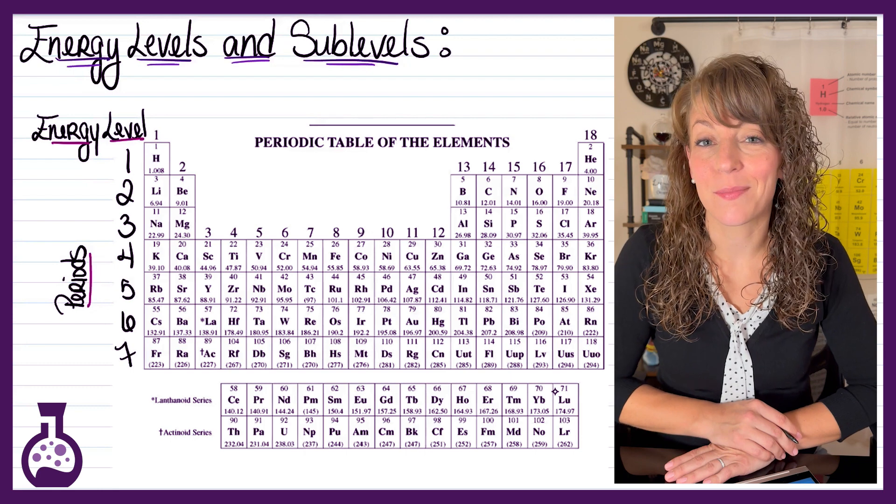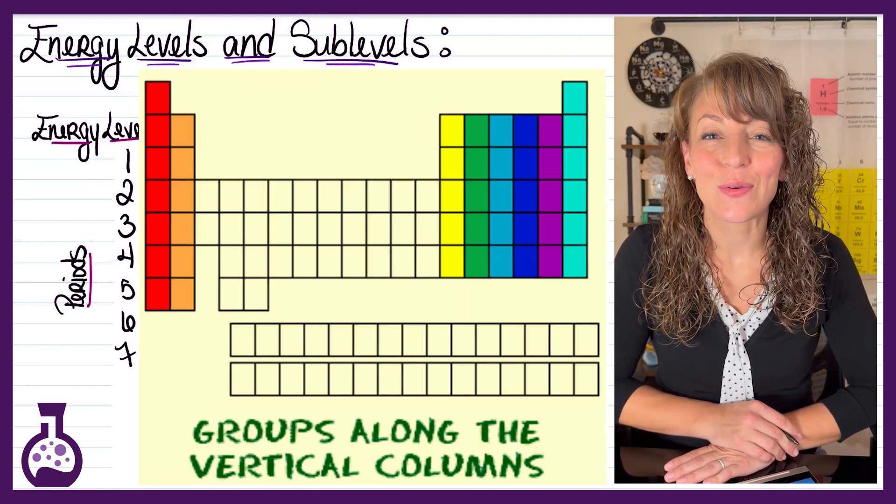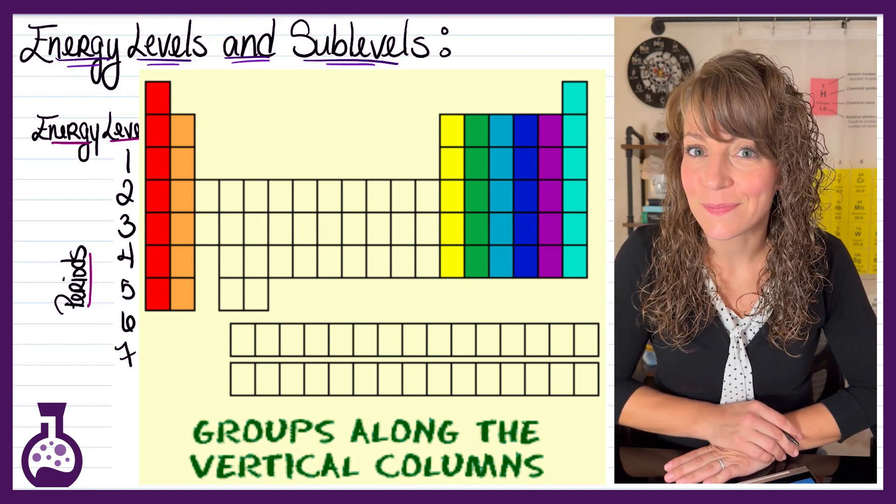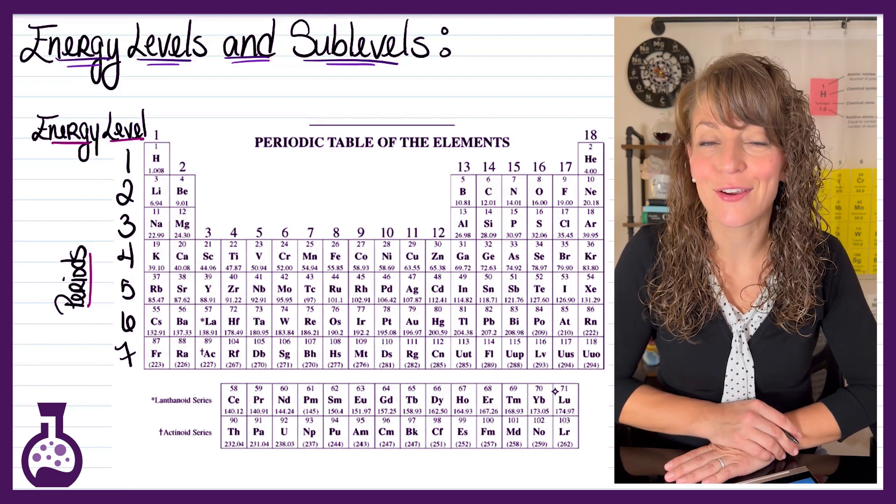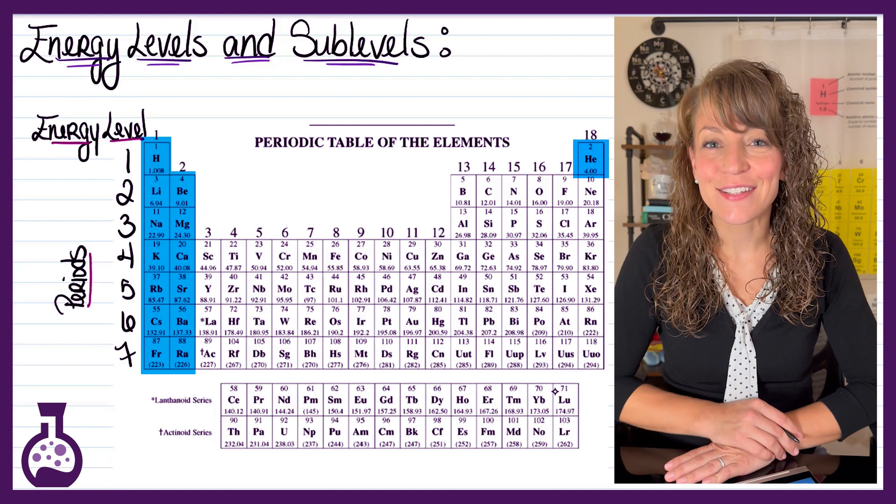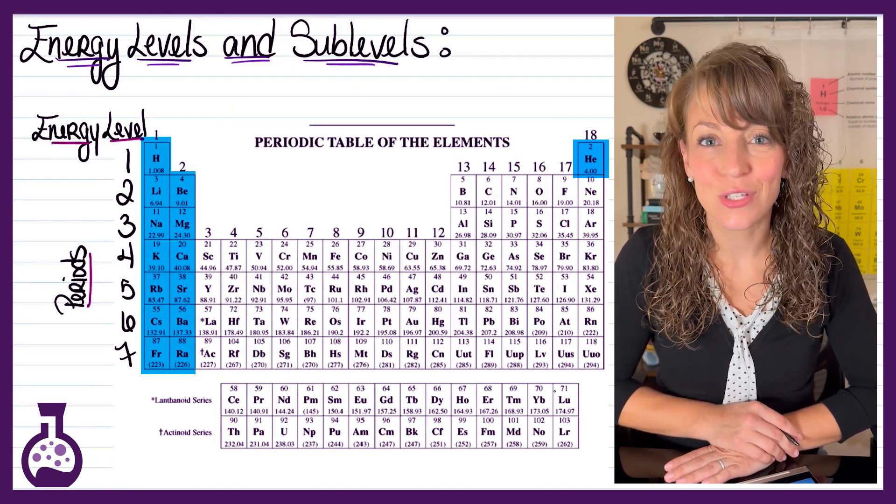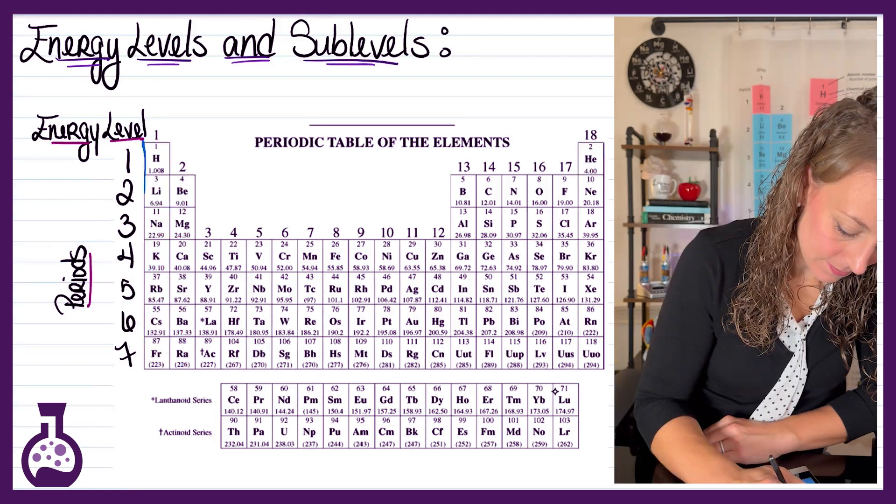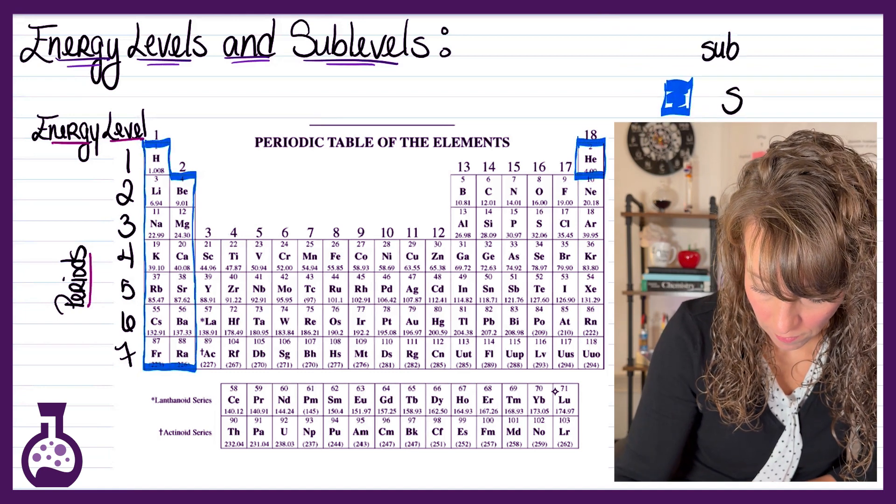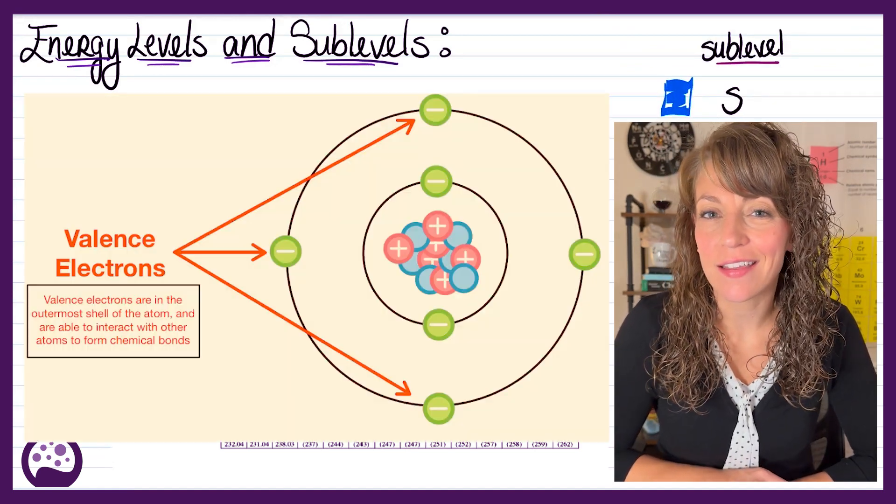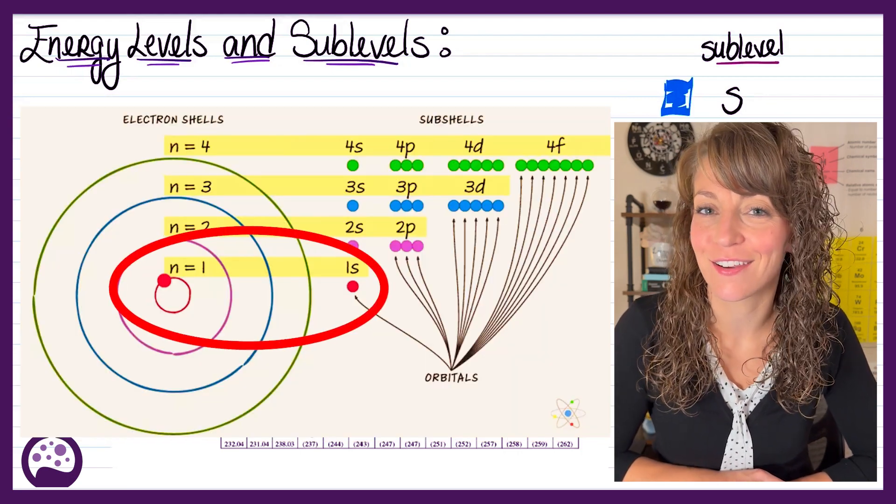Your groups on the periodic table, they are your vertical columns. So your groups will help you determine the sublevel, where you have four total sublevels, the first one being your s sublevel. And your s block on the periodic table consists of group 1, 2, and helium. So these atoms will have valence electrons that fall within the s sublevel within the corresponding energy level.